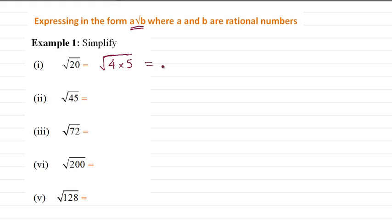Then we use the properties of surds so we can split root 4 dot which means times root 5. Then we know the square root of 4 is 2. Then we don't need to write dot anymore, we just write times square root of 5.